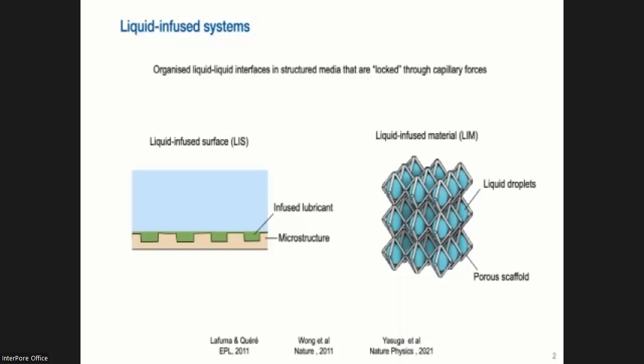Now, another type of liquid-infused system is liquid-infused material, and this is more of a recent invention. And here we have a 3D porous scaffold where we have locked in spherical droplets. So here we basically can create different shapes of interfaces in porous scaffolds and use these kind of materials for different purposes. So I'm going to start off talking about LIMs a little bit, and then move on to LIS.